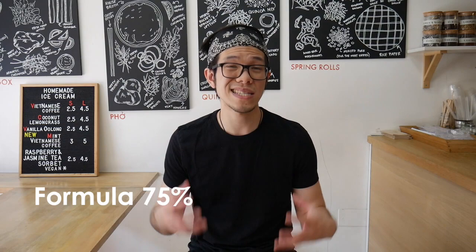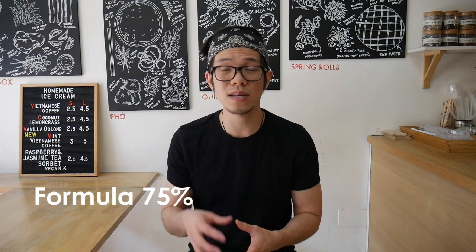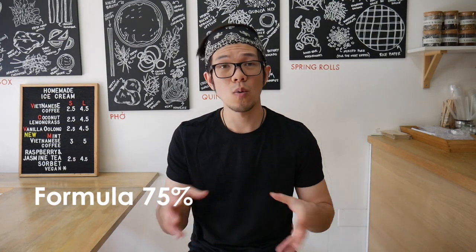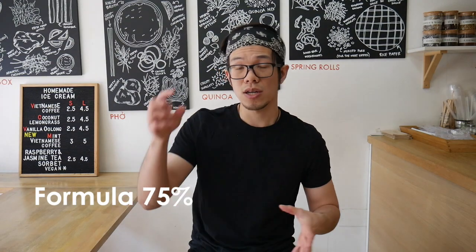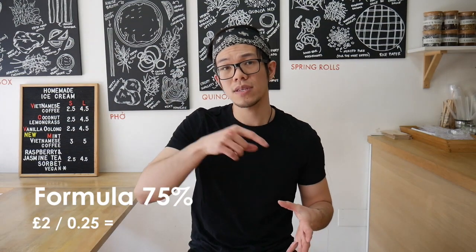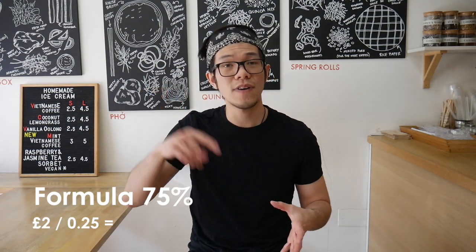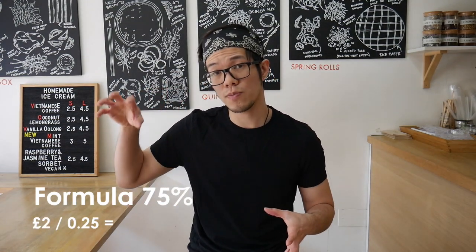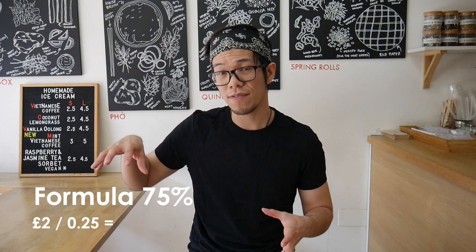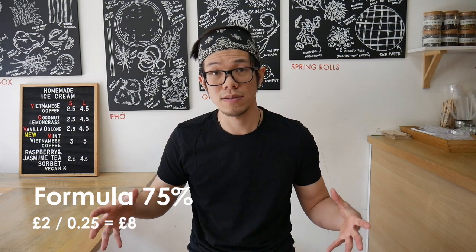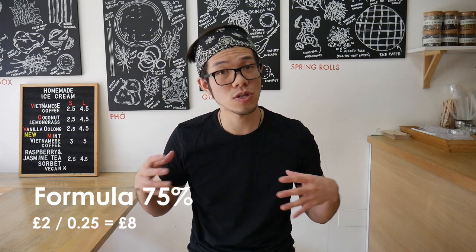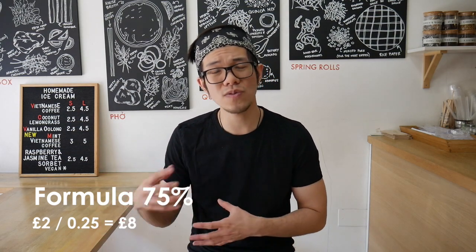Another example: if you do want to do 75% yield, which is more ideal as well, and that's what you want to try to aim for once you get past the 70%. You want to do two pounds divided by 0.25, which equals eight pounds. Which is really simple, really easy.